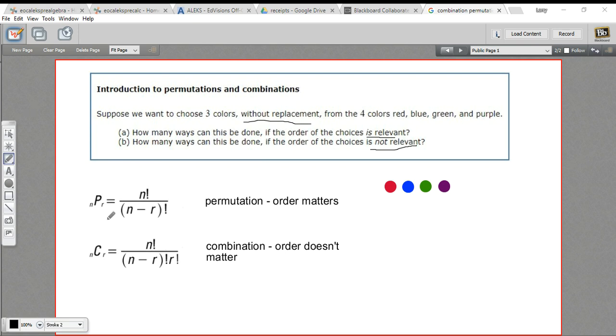We've got these formulas here. The little n down here is the total number - for us that's four, there are four colors we have. And the r is the number of things you want to choose from a group, and we want to choose three. So we can use these formulas, but I think first I'm going to start with a combination.